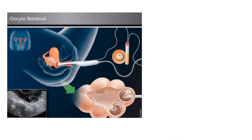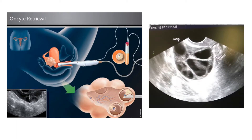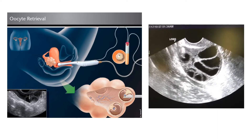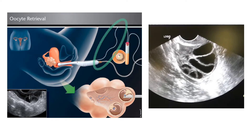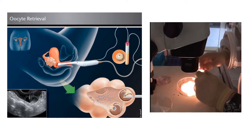The egg retrieval is scheduled 35 to 36 hours after the trigger and is done under mild anesthesia with ultrasound guidance. There is a small needle guide above the ultrasound probe, and the needle will be advanced through the needle guide to the back of the vaginal wall, then go through the vaginal wall and into the ovary. There is a vacuum suction mechanism and we will essentially aspirate the fluid and the eggs out of each follicle. Each follicle has a microscopic egg in it that we cannot see. The fluid and eggs travel through tubing and into a test tube, which is then handed off to the embryologist who will identify the eggs.